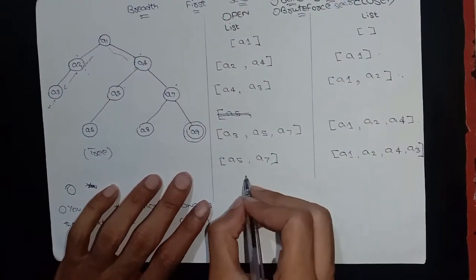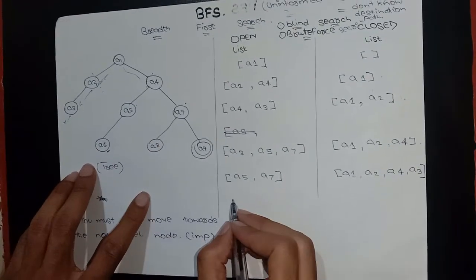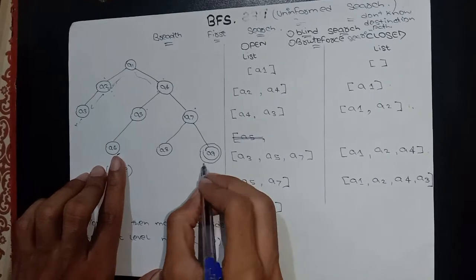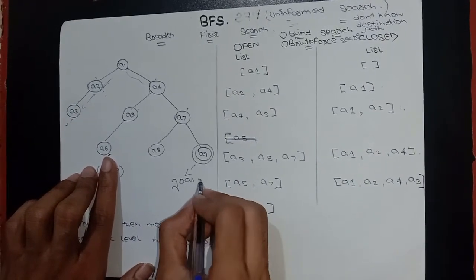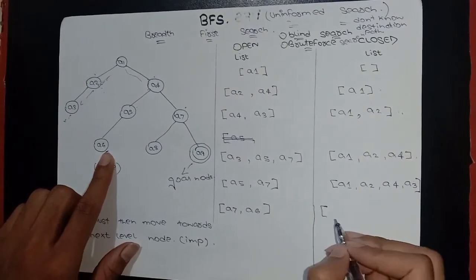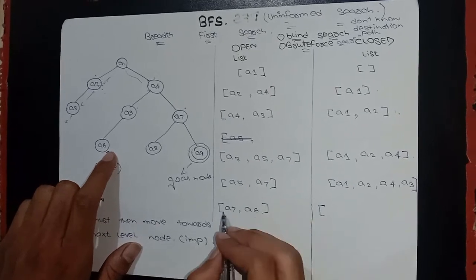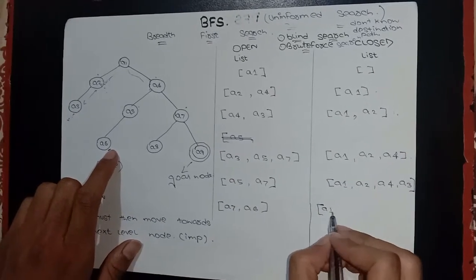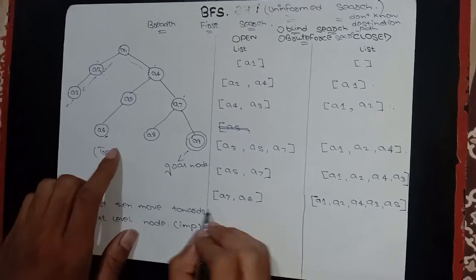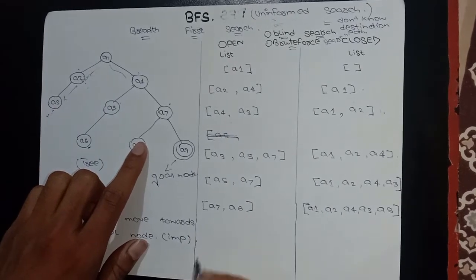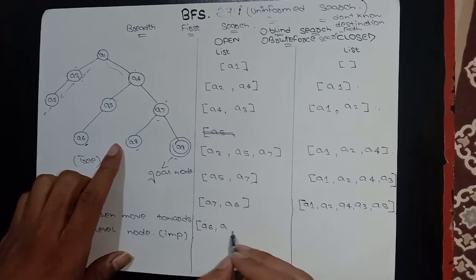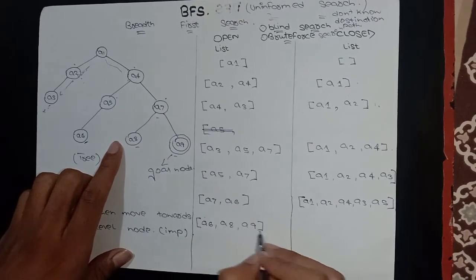Now according to the same formula I have to traverse A5, but first I write A7. A5 has only A6 as a child node. Remember, my goal node is A9 — I have to reach there. So I write A6 as A5's child node, and first write A7 according to the formula. I put A5 into the close list: A1, A2, A4, A3, A5. Then I write A6, and then the child nodes of A7 which are A8 and A9.